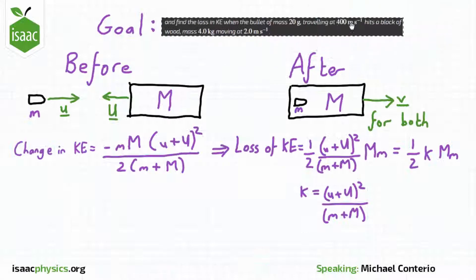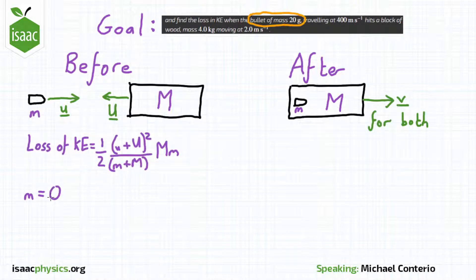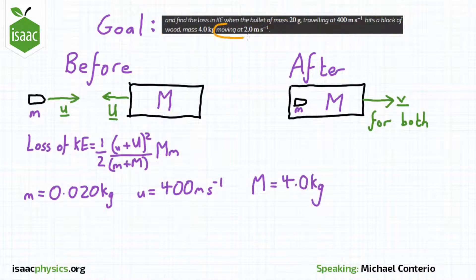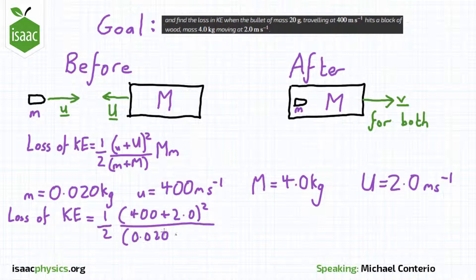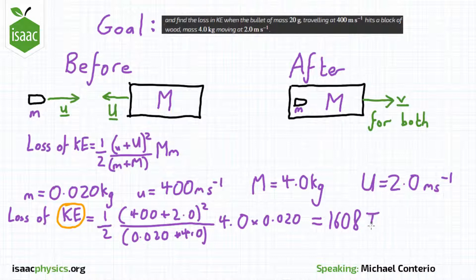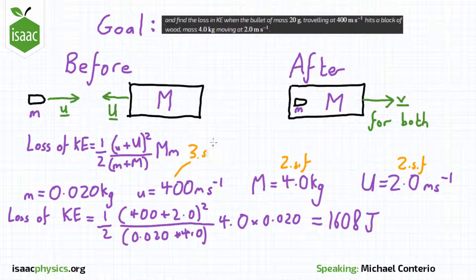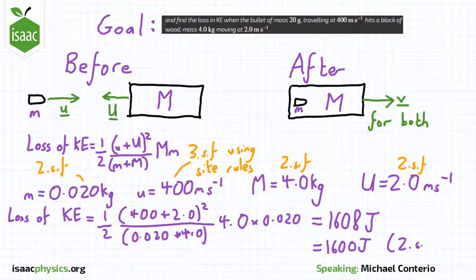This equation can then be used to solve the numerical part of the question by substituting the bullet's mass and speed and the block of wood's mass and speed before the collision into the equation. Of course we mustn't forget the units — as this is a kinetic energy, the units are joules. We also need to be careful of the number of significant figures: the mass and speed of the wooden block are given to two significant figures, the bullet's speed is given as 400 metres per second (three significant figures on the Isaac Physics site), but the bullet's mass is given to two significant figures. So we can only give our answer to two significant figures, giving a final answer of a loss of kinetic energy of 1600 joules.